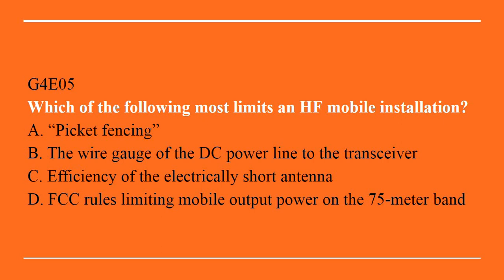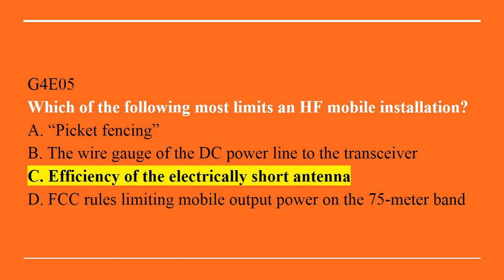G4E05: Which of the following most limits an HF mobile installation? A. Pickup fencing. B. The wire gauge of the DC power line to the transceiver. C. Efficiency of the electrically short antenna. Or D. FCC rules limiting mobile output power on the 75 meter band. Answer is C. Efficiency of the electrically short antenna.